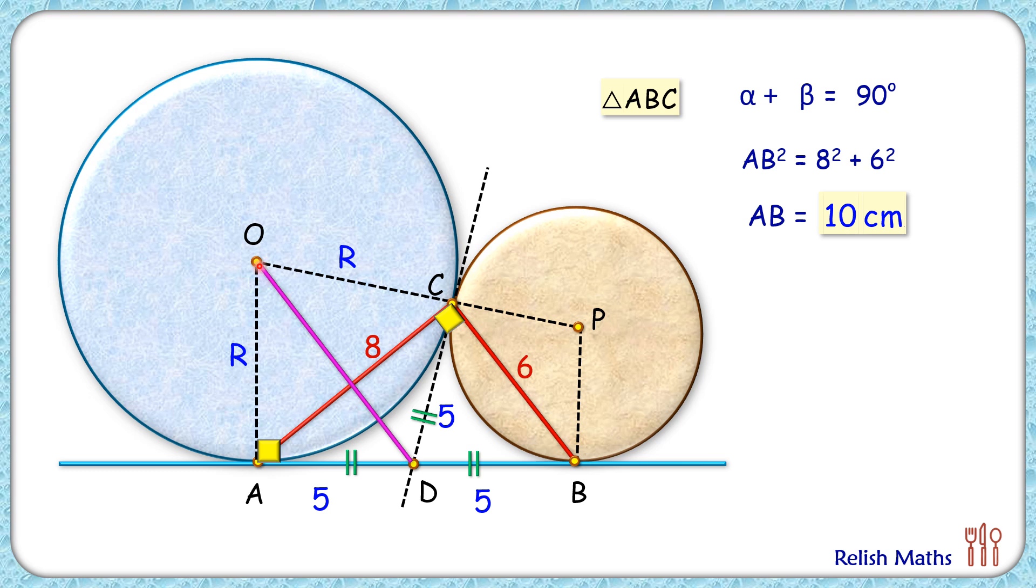Now in right angle triangle OAD, applying Pythagorean theorem, we'll get the length of hypotenuse as square root of R square plus 5 square.